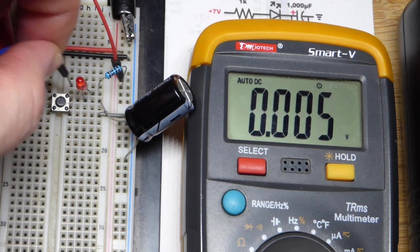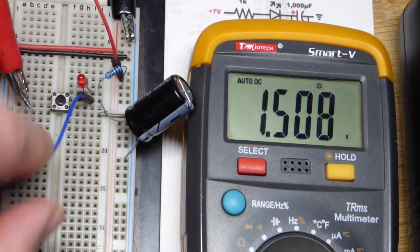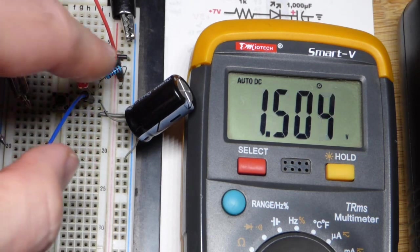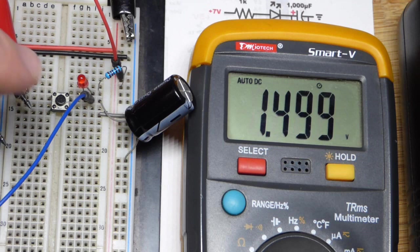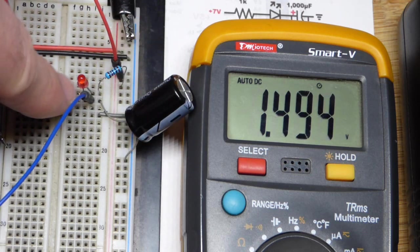And so, if I move down one spot, so we're measuring the LED and the resistor, now you can see there's about 1.5. We already saw, if I press the button,